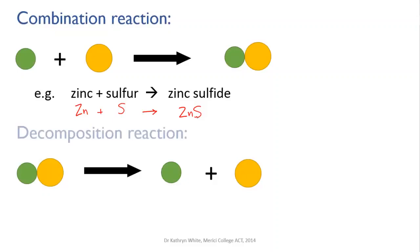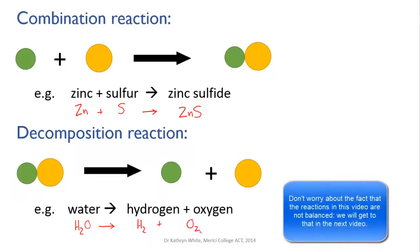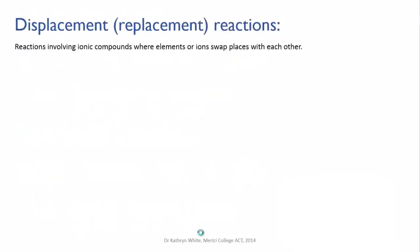The opposite to a combination reaction is a decomposition reaction. In this type of reaction, you take a single compound and make it decompose to give two or sometimes more products. An example is the decomposition of water, done by passing electricity through it. The bonds holding the water molecules together are broken and the atoms rearrange to give pure hydrogen, H₂, and oxygen, O₂.